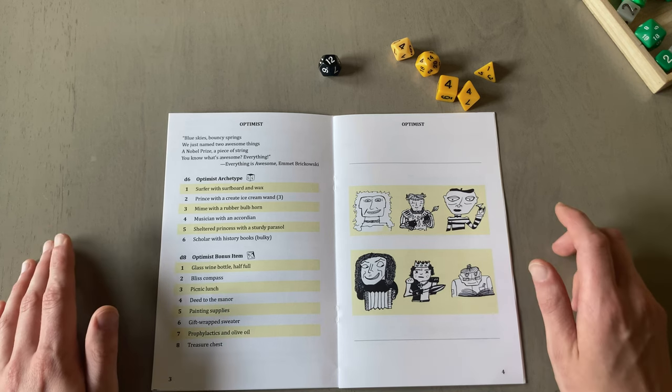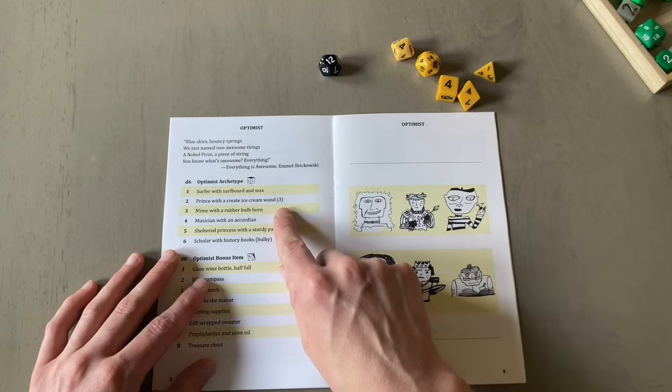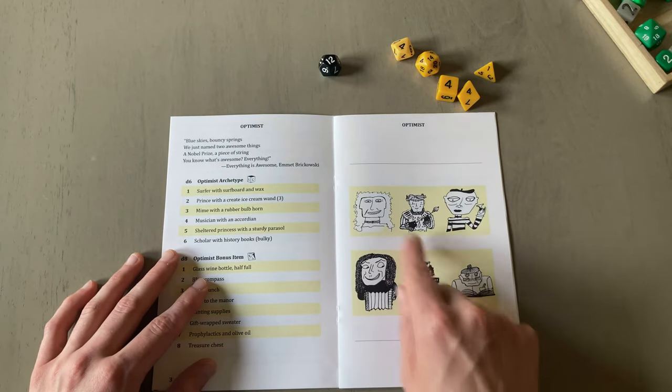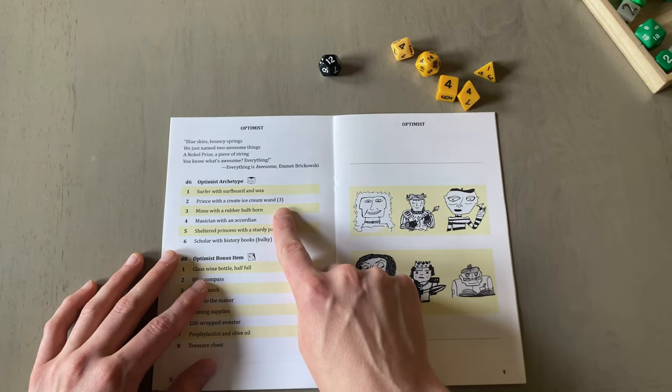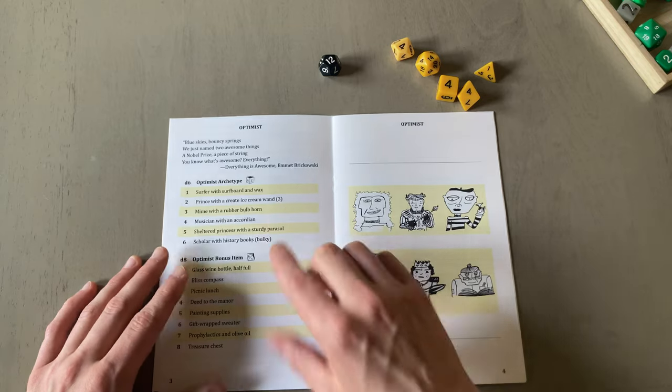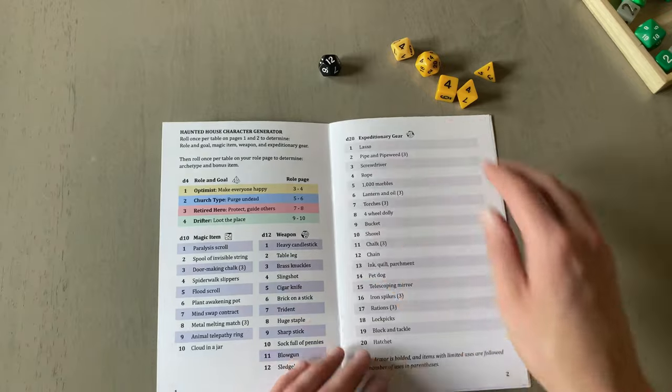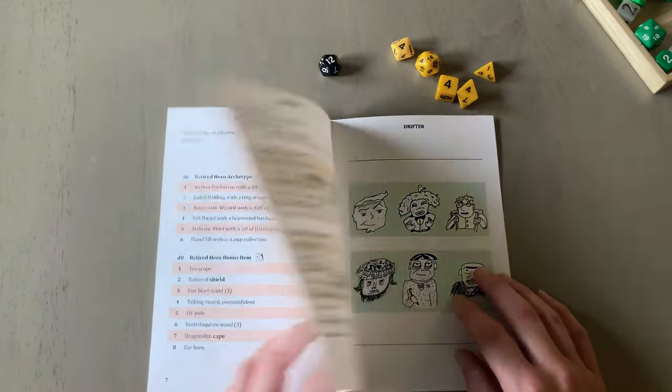Two more things. Things that have charges to them or limited charges have a number in parentheses. So the prince with an ice cream wand can only cast ice creamy spells three times.